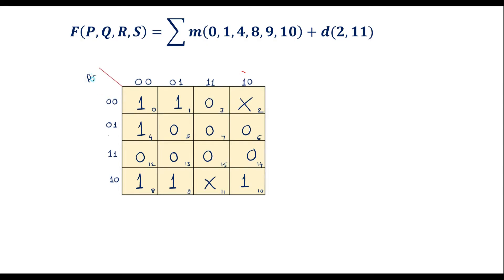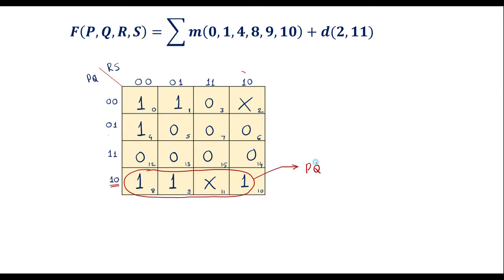Let this axis be PQ and this be RS. Now let me simplify. Here we can see that with 1, 1, cross, 1 we can form one quad — a group of these three ones along with the don't care as a quad. The simplified expression for this group is P and Q bar, since 1 corresponds to P and 0 corresponds to Q-bar. The value of this group is PQ bar.